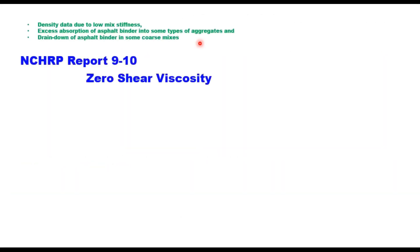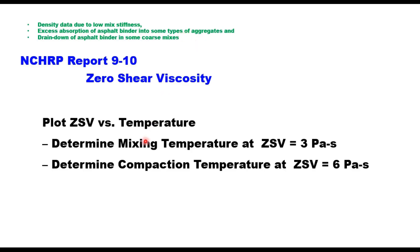Because of these reasons, NCHRP Report 910 suggests use of zero shear viscosity to determine the mixing and compaction temperature for modified binders. This zero shear viscosity is believed to be related to rutting, and European research suggests that this viscosity simulates the low shear rate in a Superpave gyratory compactor. You plot zero shear viscosity with temperature and determine mixing temperature at a zero shear viscosity of 3 Pascal·second and compaction temperature at a zero shear viscosity of 6 Pascal·second.